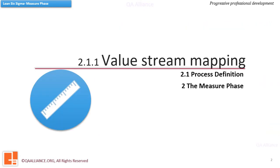Welcome to the module on Process Definition. In a lesson in the Define Phase, we had learned about defining a process in terms of process maps and swimlanes. In this module, we'll focus on capturing data on the processes where improvement is required. We'll learn the concept of value stream mapping in detail, and also understand how it differs from the other three types of process definition tools: process maps, swimlanes, and SIPOC analysis.